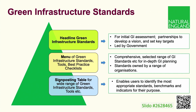The standards are set out in an easy-to-use three-level structure. At the top are the headline green infrastructure standards, used by green infrastructure partnerships to undertake initial assessments, develop a vision, and set local green infrastructure targets — these are led by government. The middle level is a more comprehensive but carefully selected menu of green infrastructure standards, tools, best practice checklists, and indicators owned by various organisations. At the bottom is the signposting table — a spreadsheet including a wide range of standards and tools to help users identify those most appropriate for their purpose.